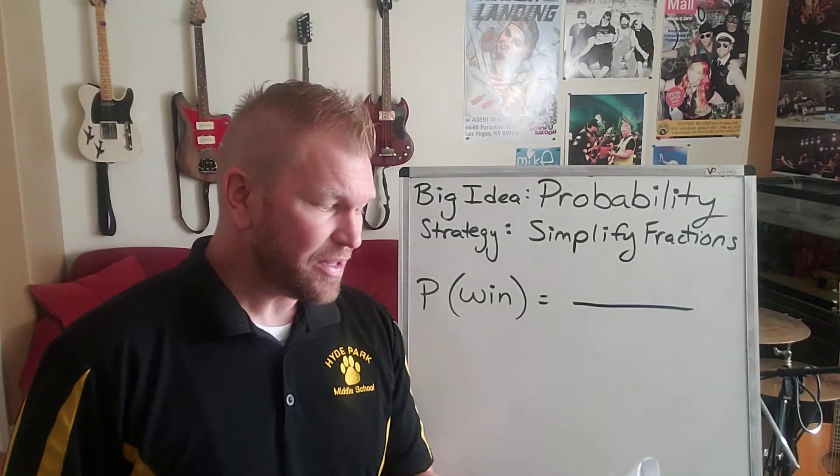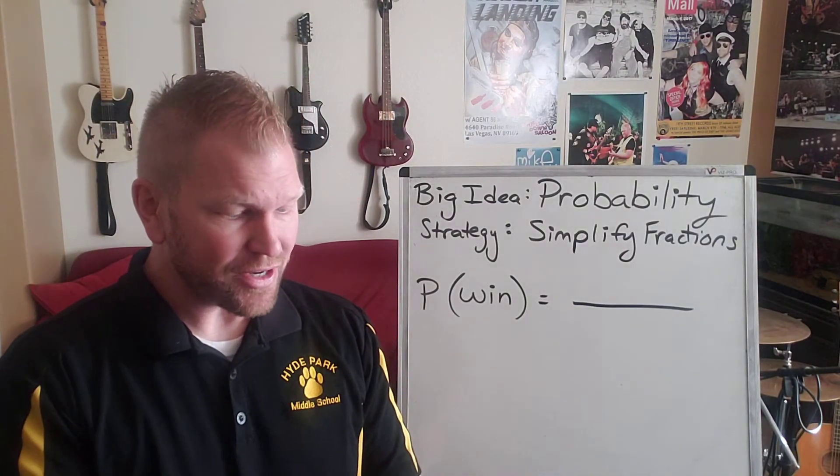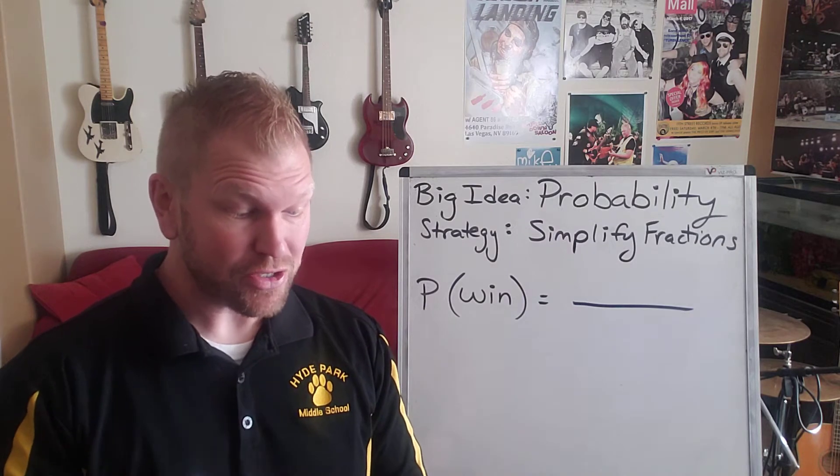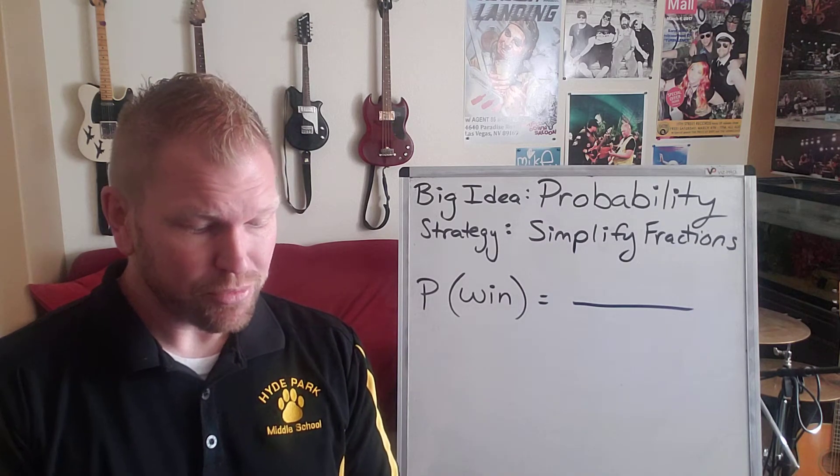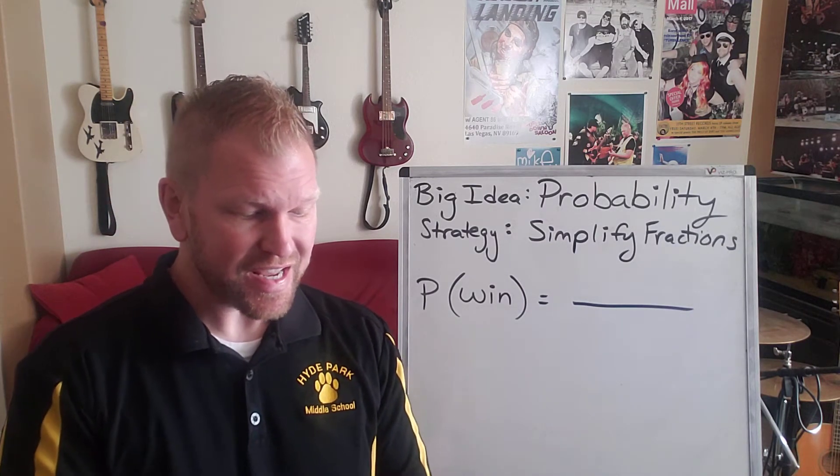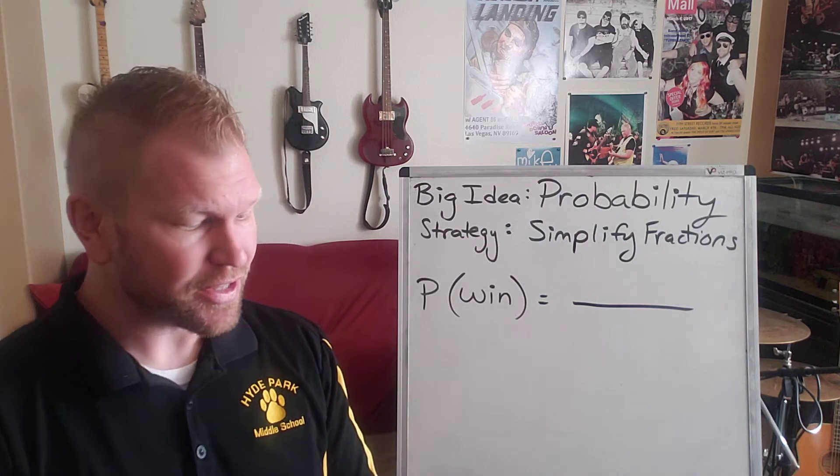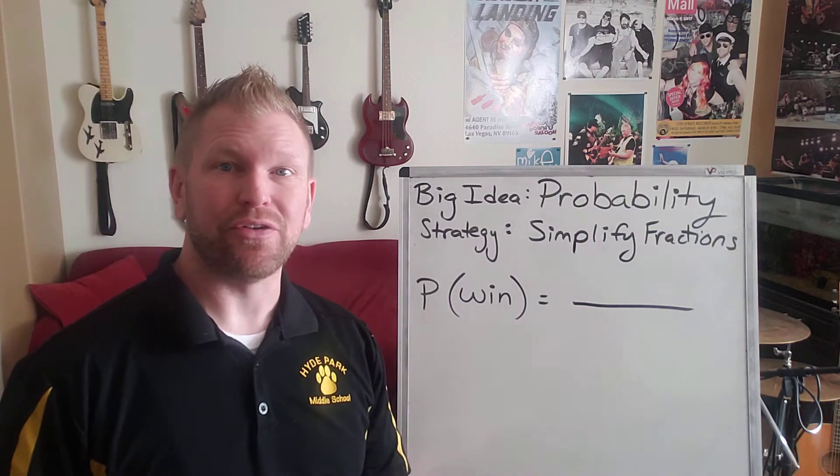Alright, this question is: a family of four has each picked out a lottery ticket for a family cruise. If the total number of tickets produced is 10,000, what is the probability that a member of the family will win the lottery?